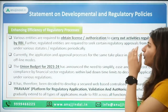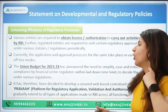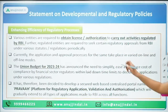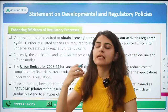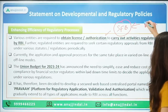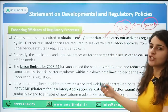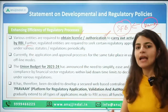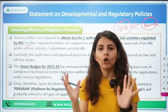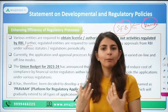The second thing RBI is going to work on is efficiency in regulatory processes. Banks have to obtain licenses and authorizations from RBI to carry out certain activities — for example, a UCB or a small finance bank needing a license. RBI wants to streamline and bring efficiency to the process of authorization and obtaining licenses for various entities, so there can be ease in the process.